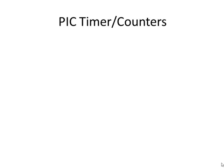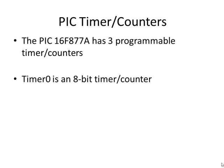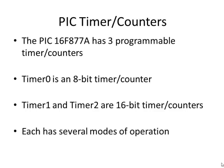Let's take a look at the PIC timer counters. This PIC chip, the 16F877A, has three programmable timer counters: Timer 0, Timer 1, and Timer 2. Timer 0 is an 8-bit timer counter. Timers 1 and 2 are 16-bit timer counters and their operation is identical to each other, so I'm just going to show you Timer 1. Each one has several modes of operation, and you choose the mode based on the control word that you write to its control register.